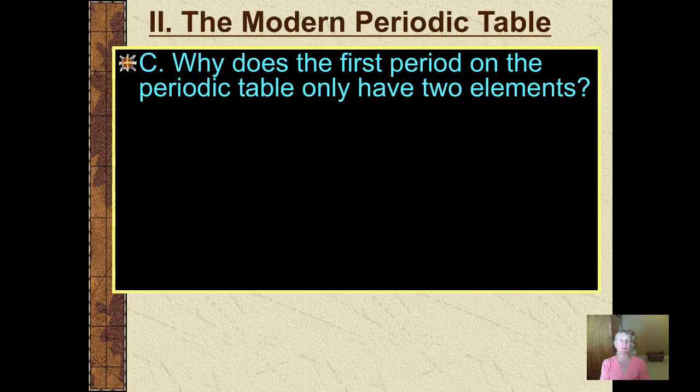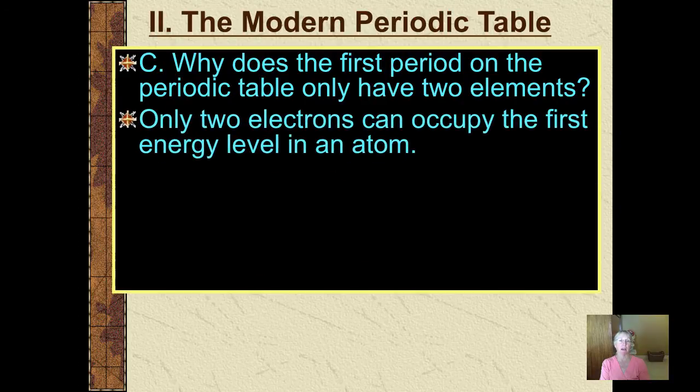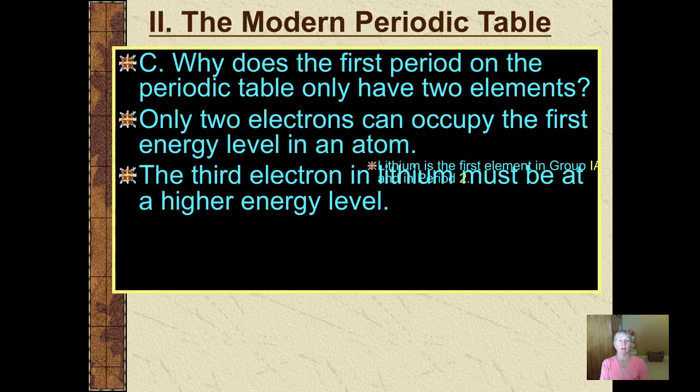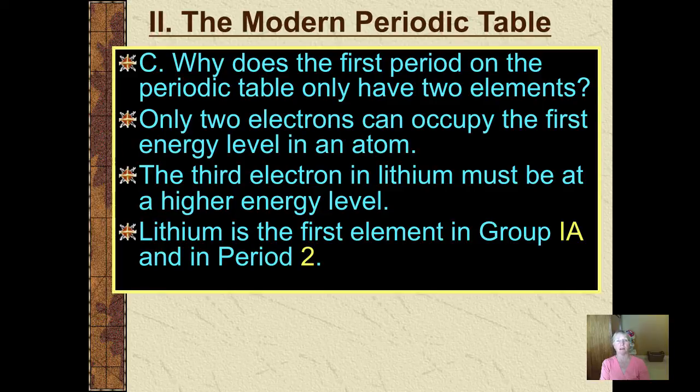The reason why the first period on the periodic table has only two elements is because all we can have at the first energy level is a spherical s orbital, which can accommodate elements that have no more than two electrons total. So that would be hydrogen and helium. If you go to element number three on the periodic table, its first two electrons would be found at the first energy level. But the third electron in lithium has to be at the next highest energy level. Remember, the Aufbau principle says to build up, electrons fill in to the next highest level or sublevel.